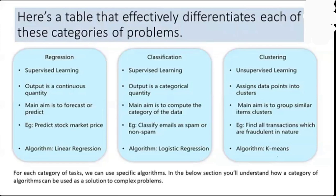The output is a continuous quantity in case of regression. It is a categorical quantity in case of classification. And in case of clustering, it assigns the data point into a cluster, because different clusters are being made and the data points need to be assigned to those clusters.